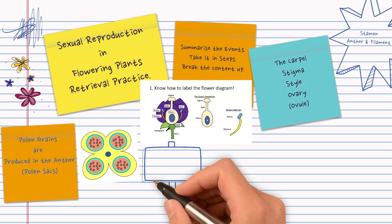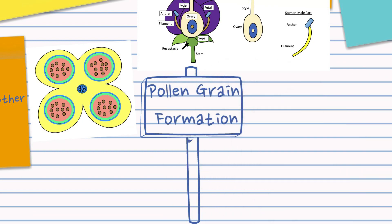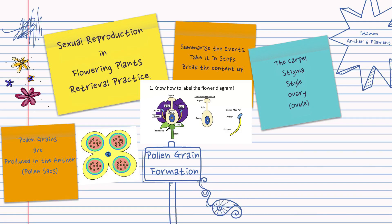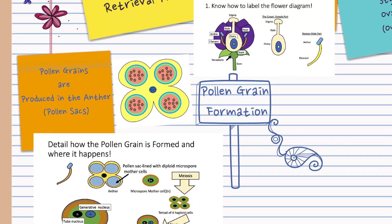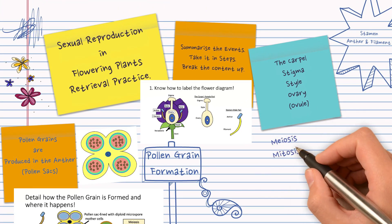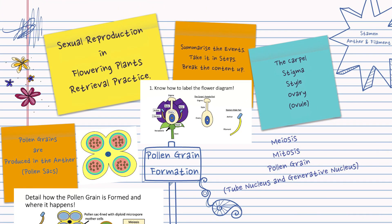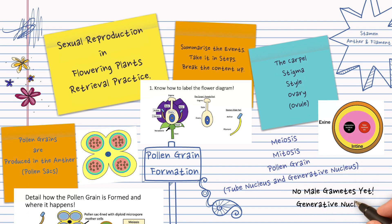Now go into detail about how pollen grains are formed. You should know the details of this, watch the other video if you don't. It all starts off with those microspore mother cells undergoing meiosis followed by mitosis to give you that pollen grain with the tube nucleus and the generative nucleus, but no male gametes until that generative nucleus undergoes mitosis.